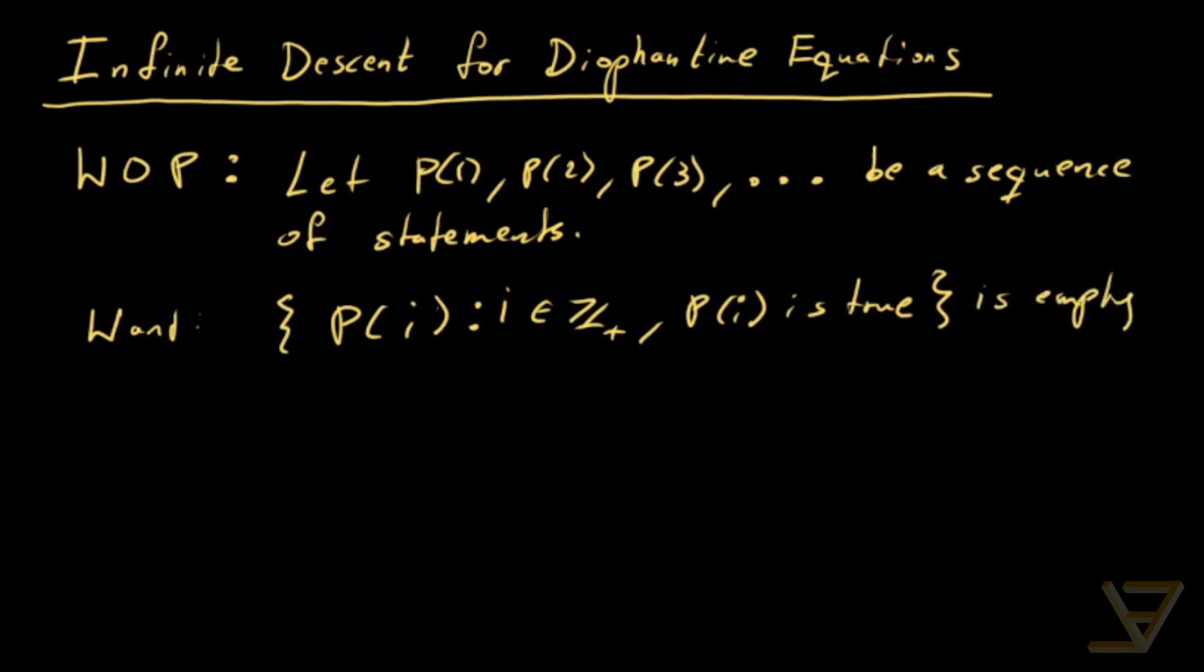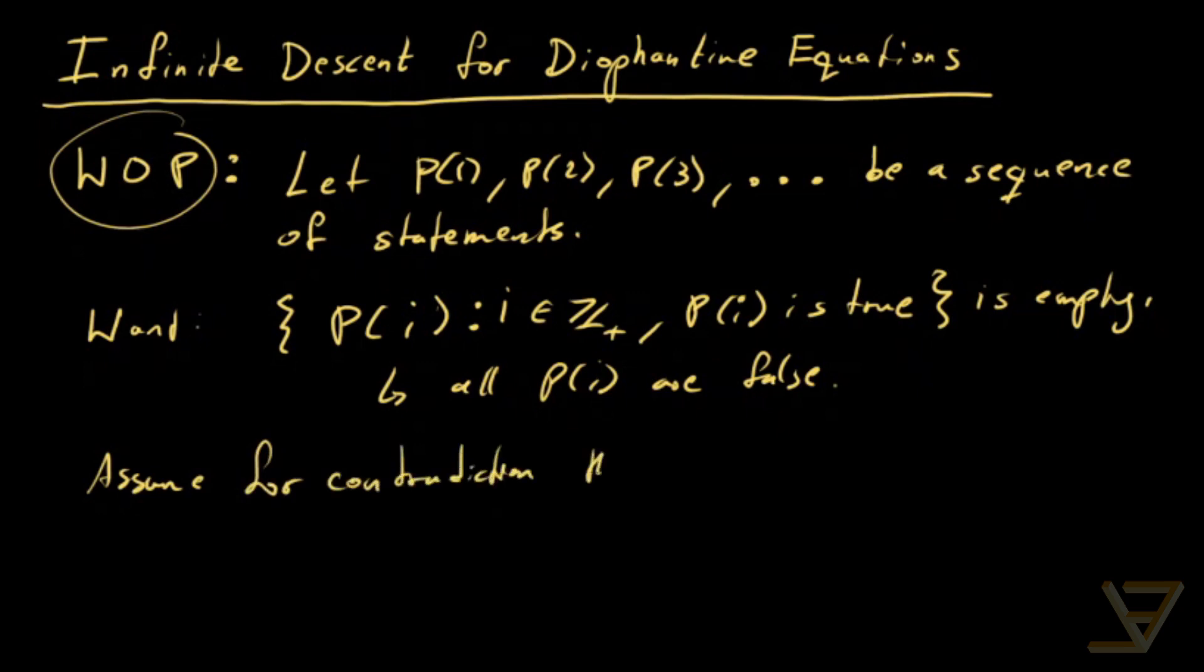In other words, all P_i are false. And here's what we're going to do. We're going to use the well-ordering principle to do it. So we're going to assume for contradiction